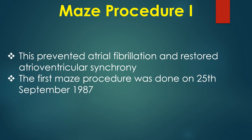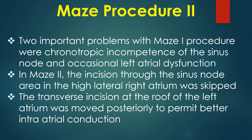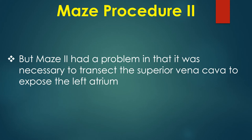This prevented atrial fibrillation and restored atrioventricular synchrony. The first Maze procedure was done on 25th September 1987. Two important problems with the Maze procedure were chronotropic incompetence of the sinus node and occasional left atrial dysfunction. In Maze 2, the incision through the sinus node area in the high lateral right atrium was skipped, and the transverse incision at the roof of the left atrium was moved posteriorly to permit better intra-atrial conduction. However, Maze 2 required transecting the superior vena cava to expose the left atrium.